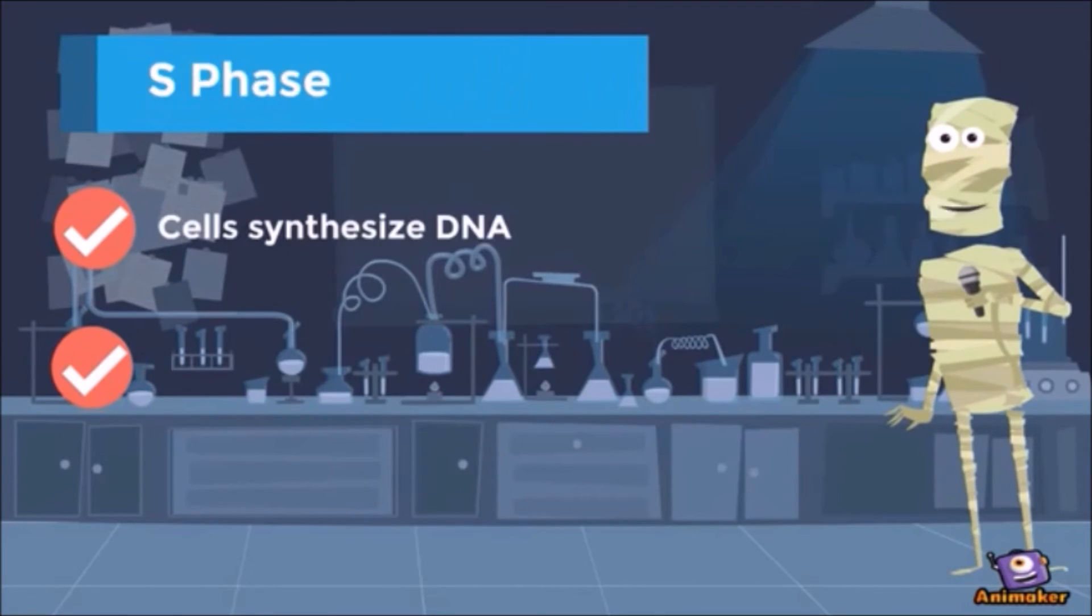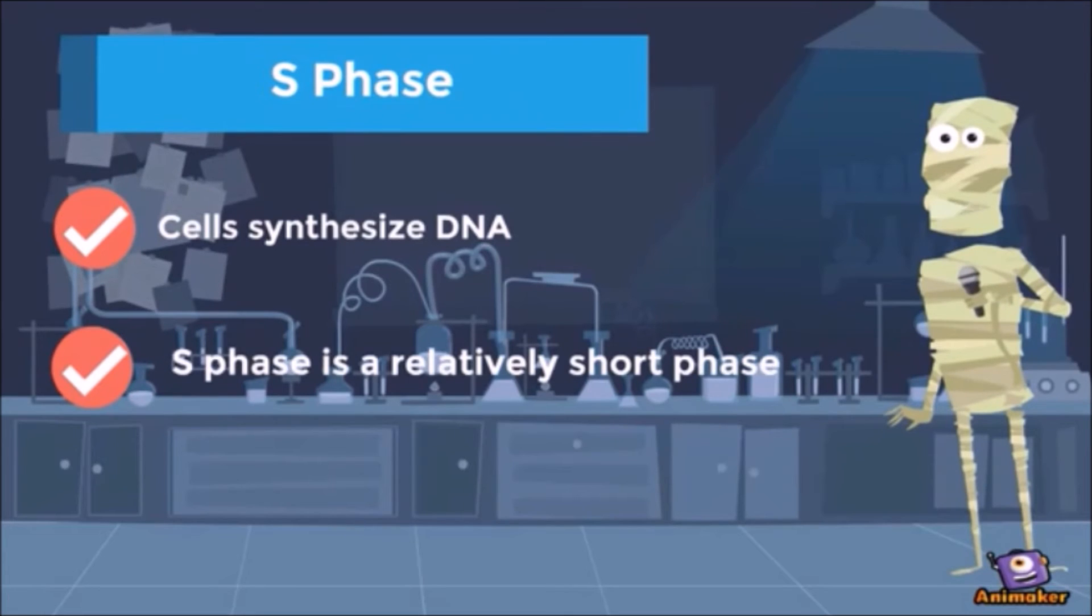After the G1 phase comes S phase. S phase is where cells synthesize their DNA. S phase is a relatively short phase. Chromosomes are now replicated from 2N to 4N.